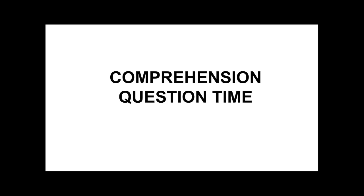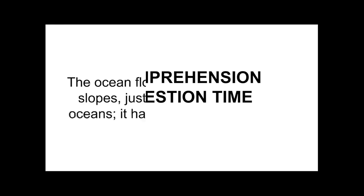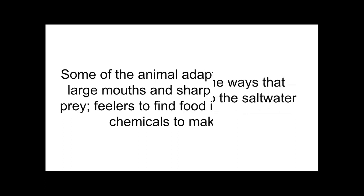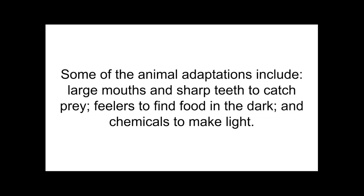Here is our final comprehension question time for this read aloud. Number four: What are some of the ways that animals have adapted to the saltwater habitats? Some of the animal adaptations include large mouths and sharp teeth to catch prey, feelers to find food in the dark, and chemicals to make light.